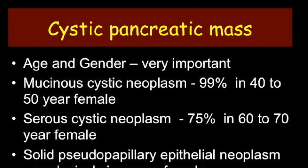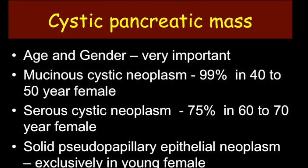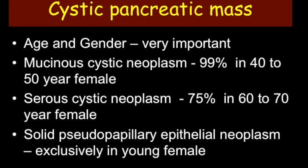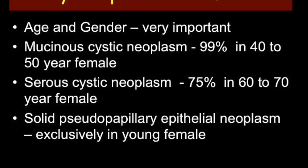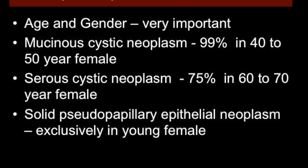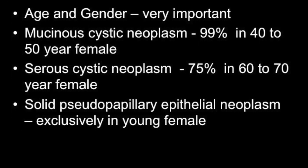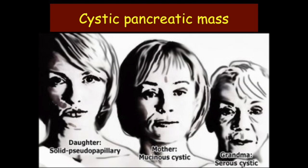For cystic pancreatic masses, age and gender are very important. Almost 99% of mucinous cystic neoplasms are seen in middle-aged females, while 75% of serous cystic neoplasms are seen in elderly females, and solid pseudopapillary epithelial neoplasms are exclusively seen in young females. So age can help us differentiate these tumors.